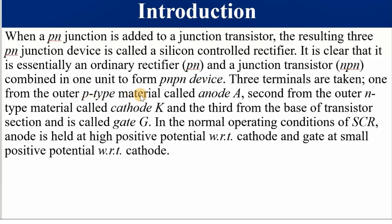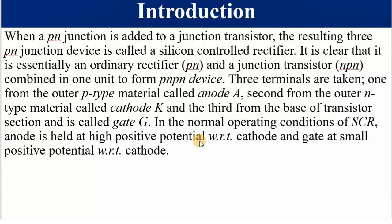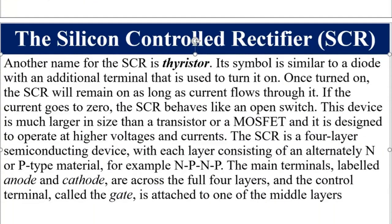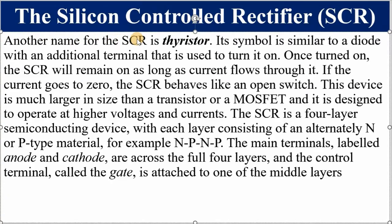In normal operating conditions, the anode is held at a positive potential with respect to the cathode. The anode is connected to the positive terminal and the cathode to the negative terminal, with a small positive potential applied to the gate. The SCR is also known as a thyristor worldwide. Its symbol is similar to a diode with an additional gate terminal connected to the cathode, used to turn it on.